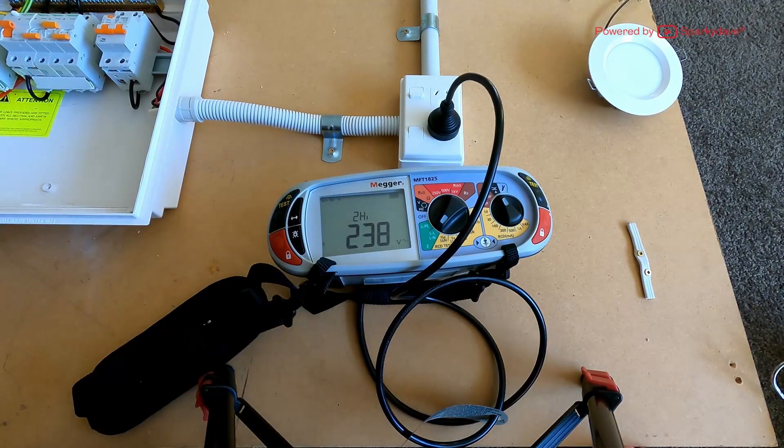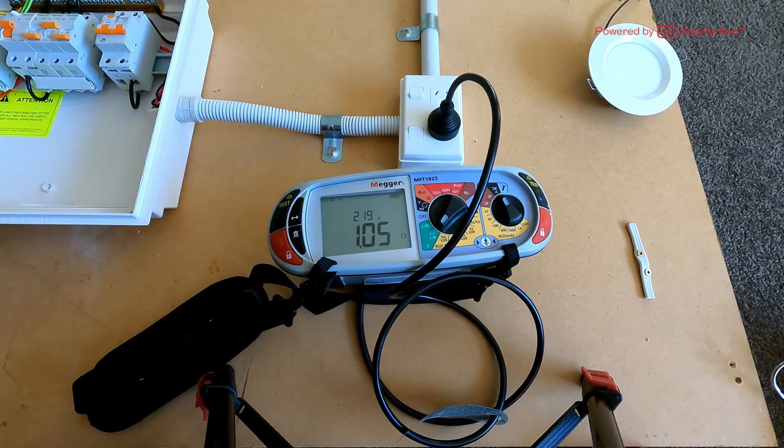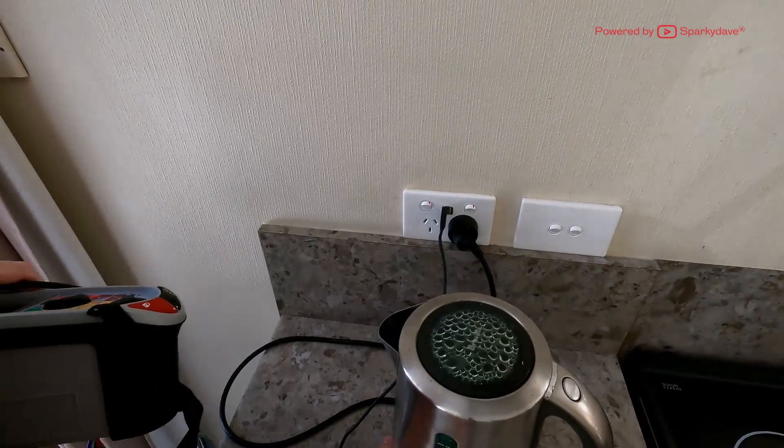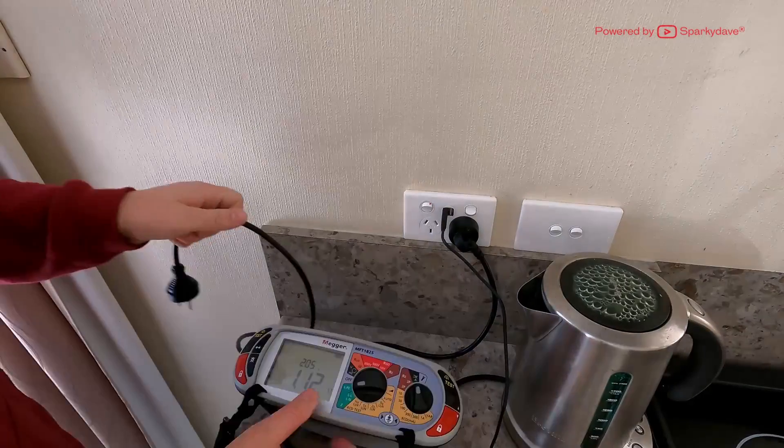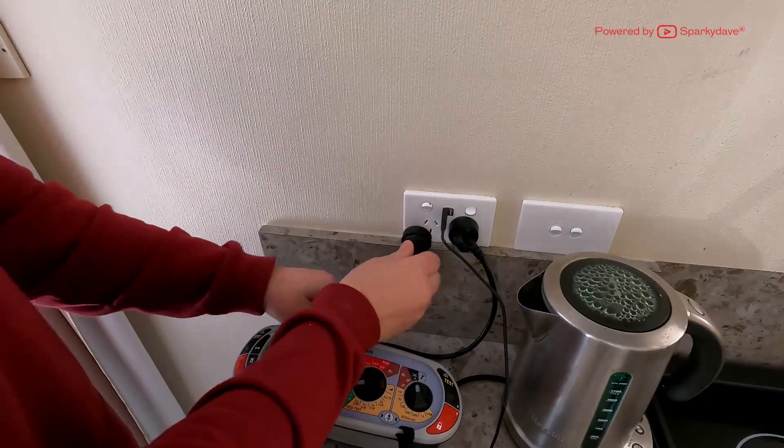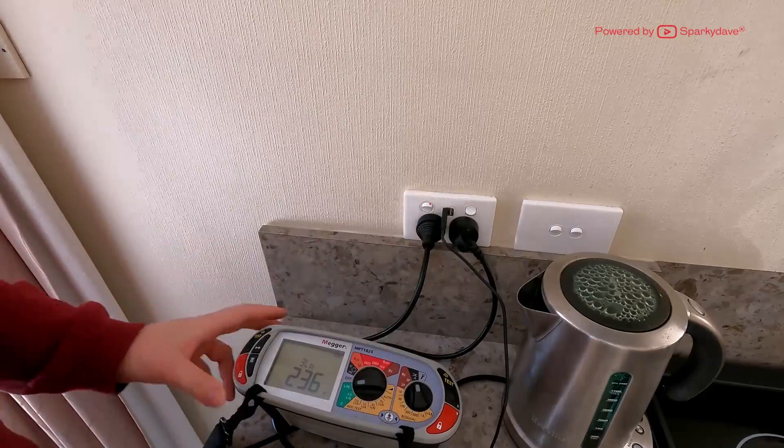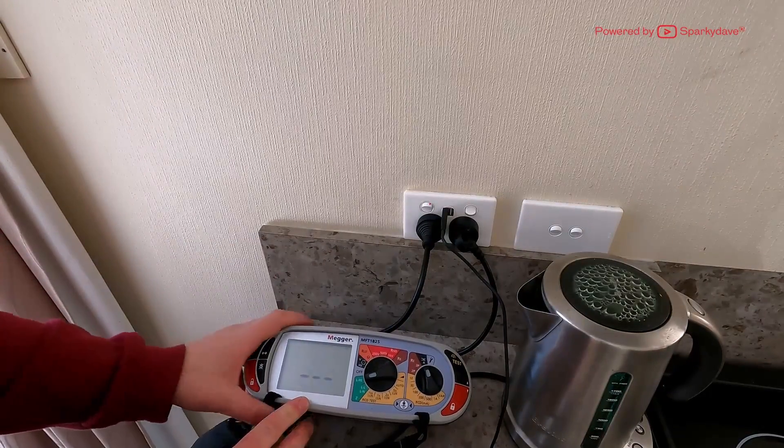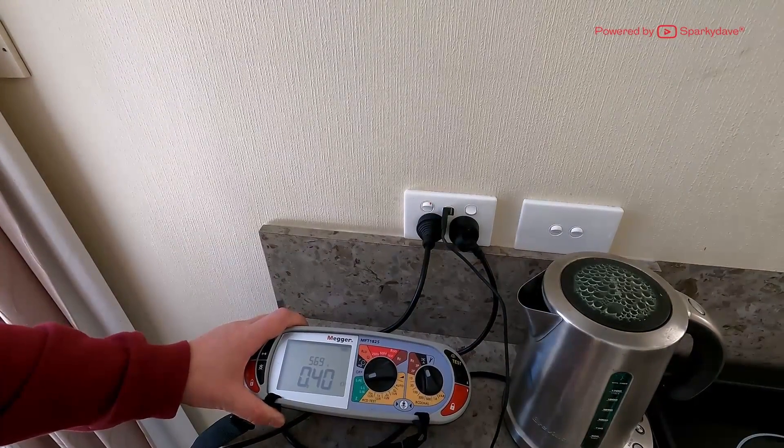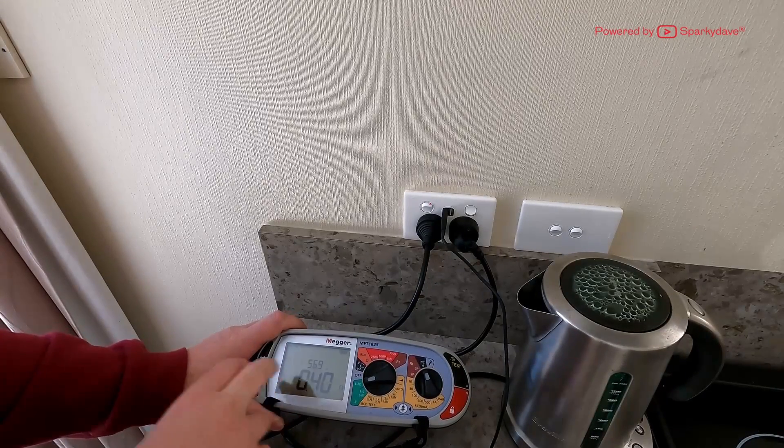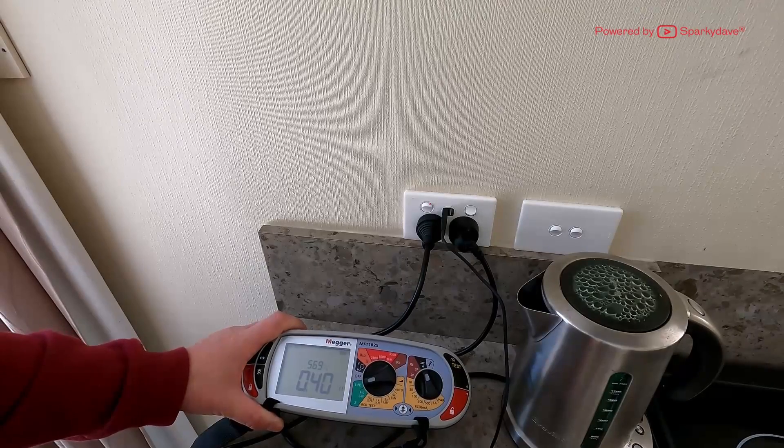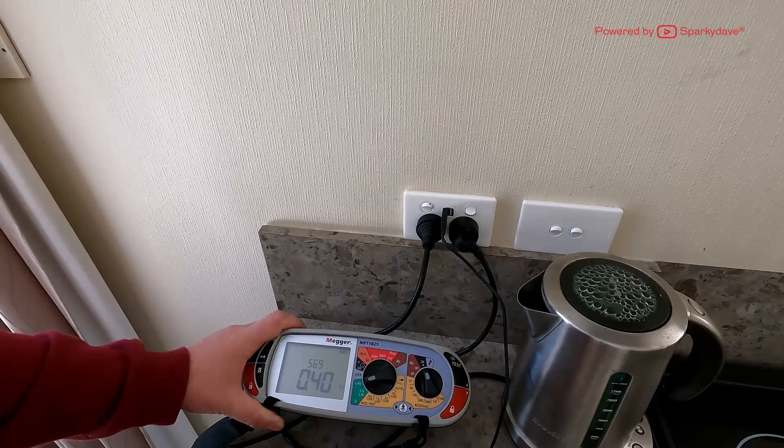So what I've got here is a socket that's much closer to the point of supply, so I'll just do one here to show you what sort of results we do expect. And there we go, that's a much lower impedance. It's much closer to the point of supply, and of course there's a higher prospective fault current that's going to be produced.